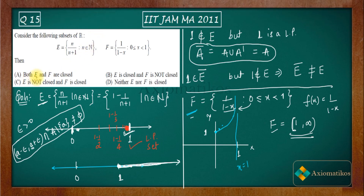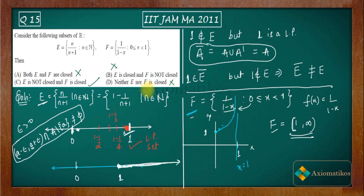Option A says both E and F are closed — incorrect, since E is not closed. Option B says E is closed and F is not — also incorrect. Therefore option C is correct and D is incorrect. To summarize: you should approach these problems graphically first to build intuition, and then verify mathematically. If you don't have the feel for it, doing it purely mathematically is just a waste. Thank you.